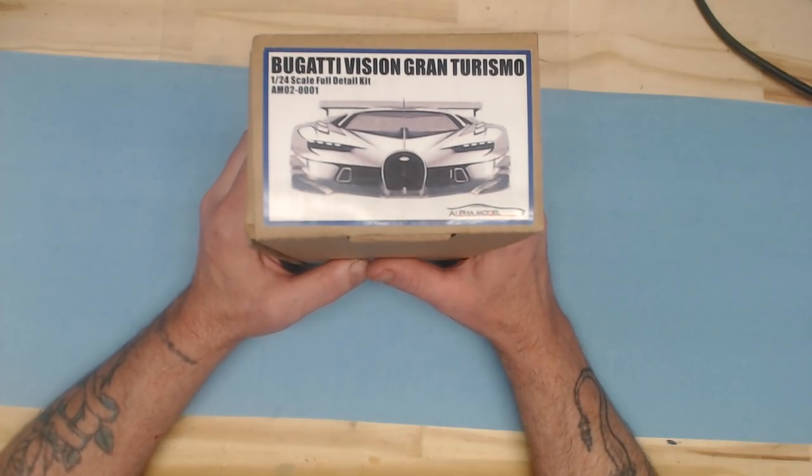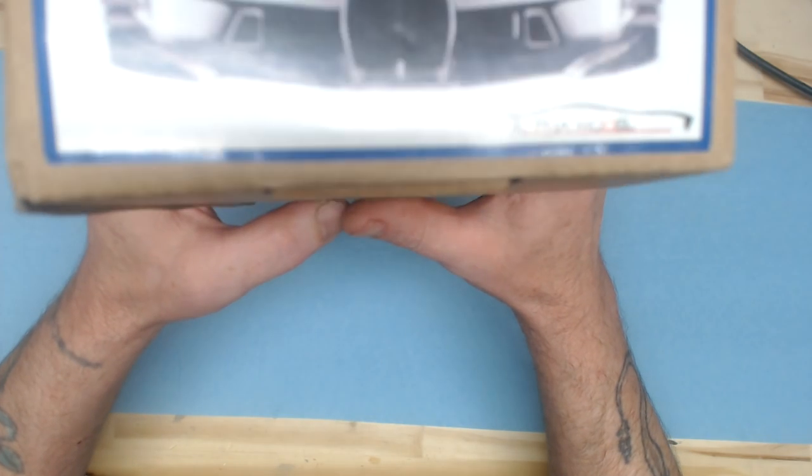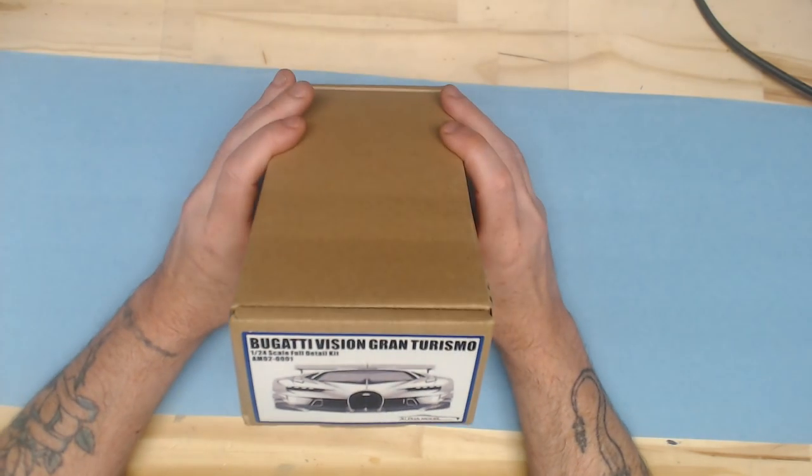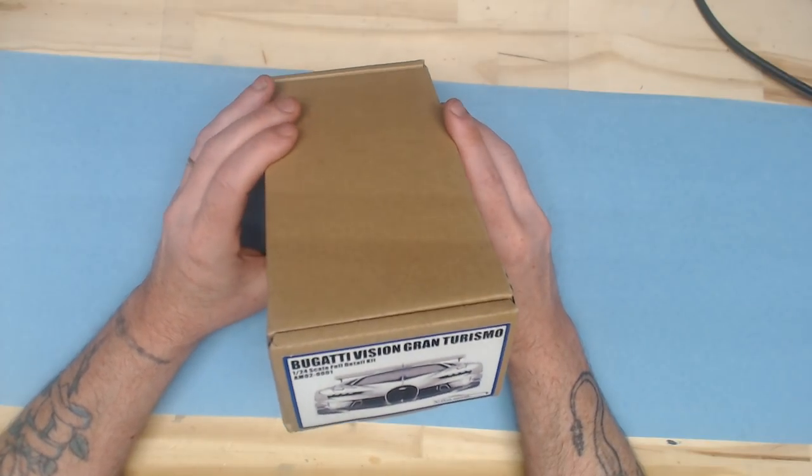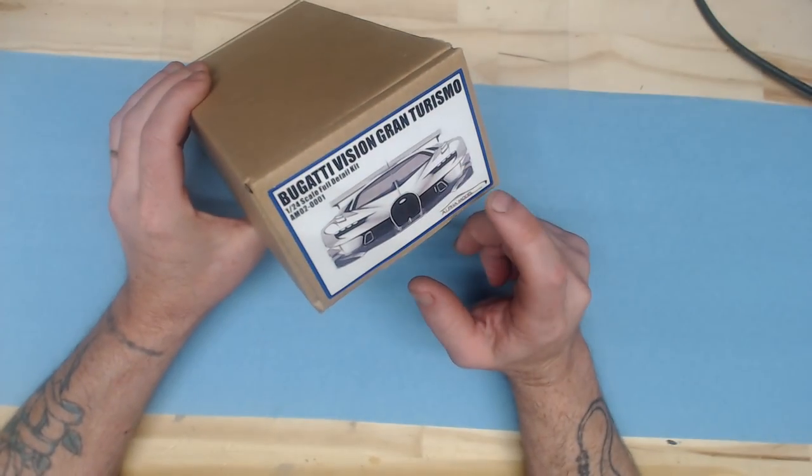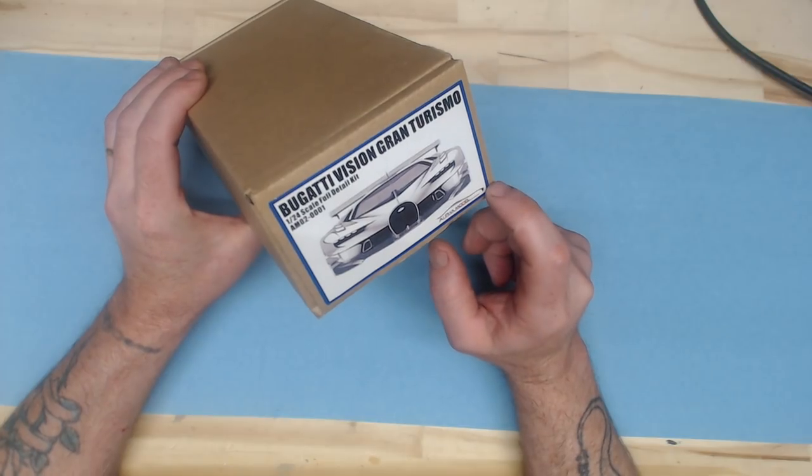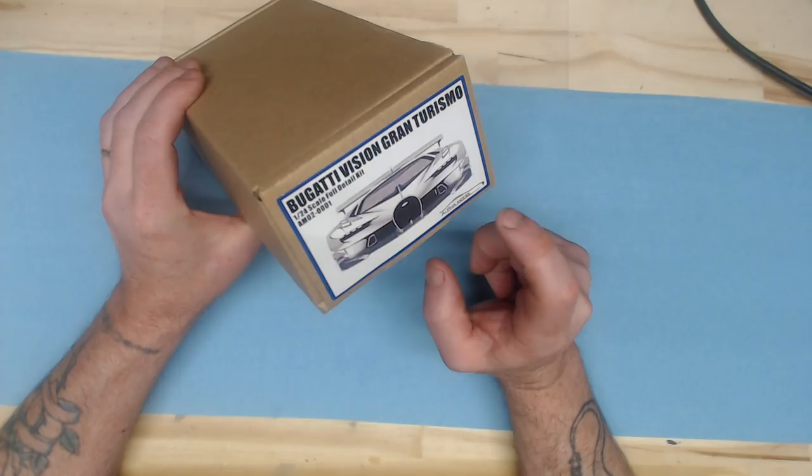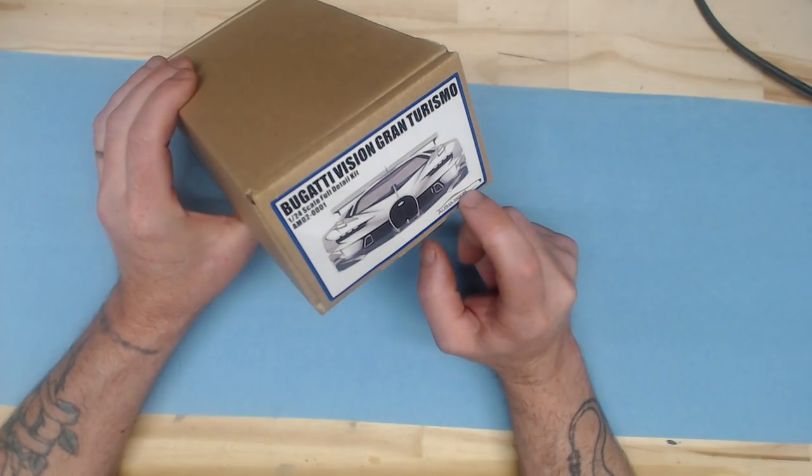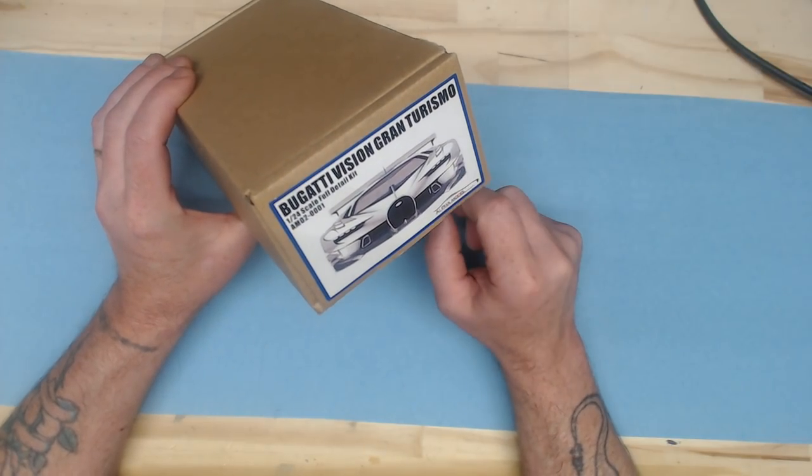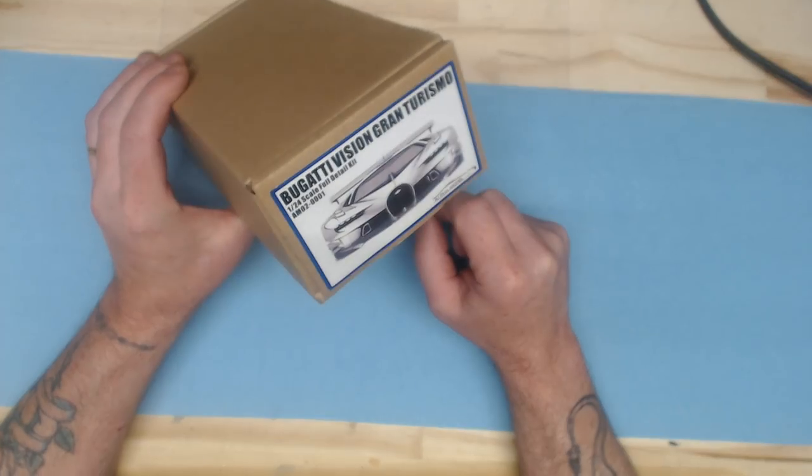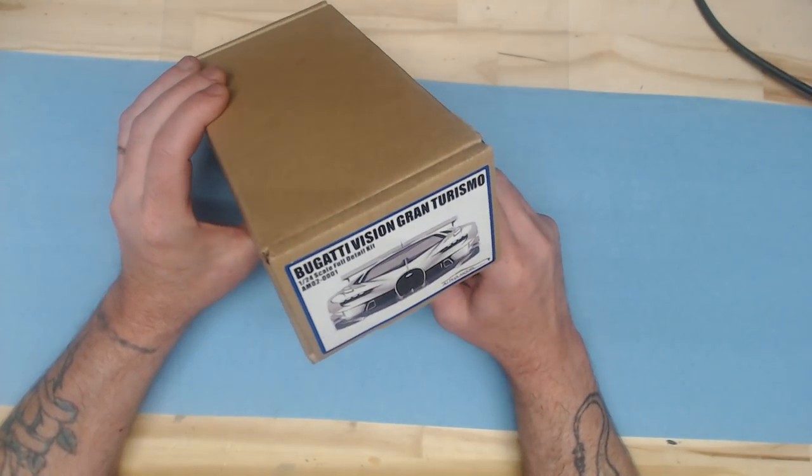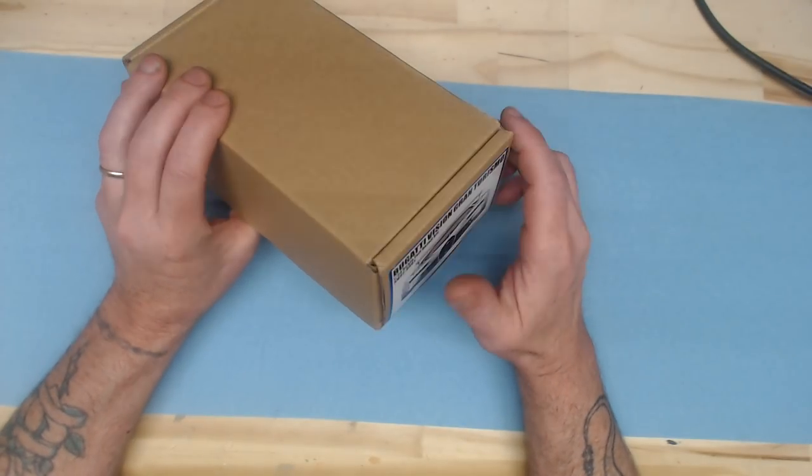What we're talking about is the Bugatti Vision Gran Turismo 1:24 scale full detail kit from Alpha Models. You can find these online, and if you're on Facebook, there's a page for anybody that builds this type of product or any Alpha Model builds. You can put it on there, update your progress. It's a pretty cool site with some amazing work being put up.